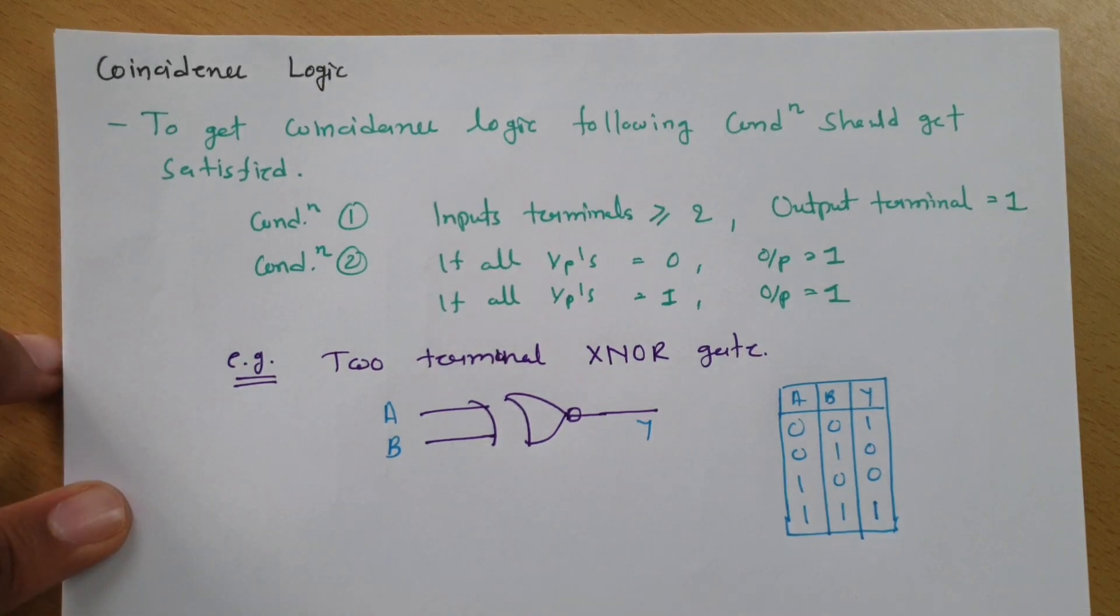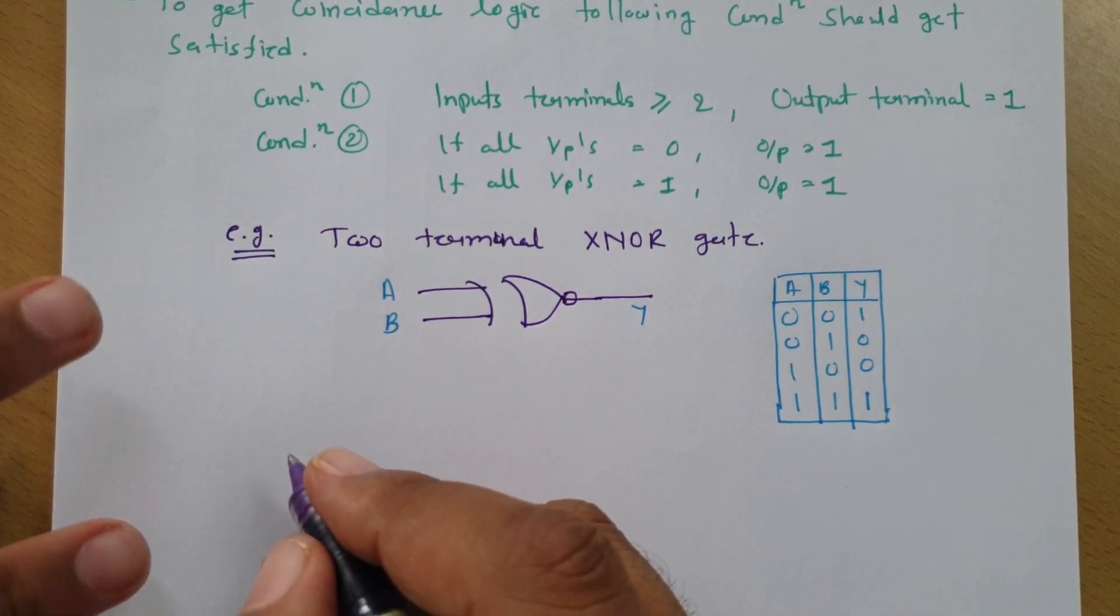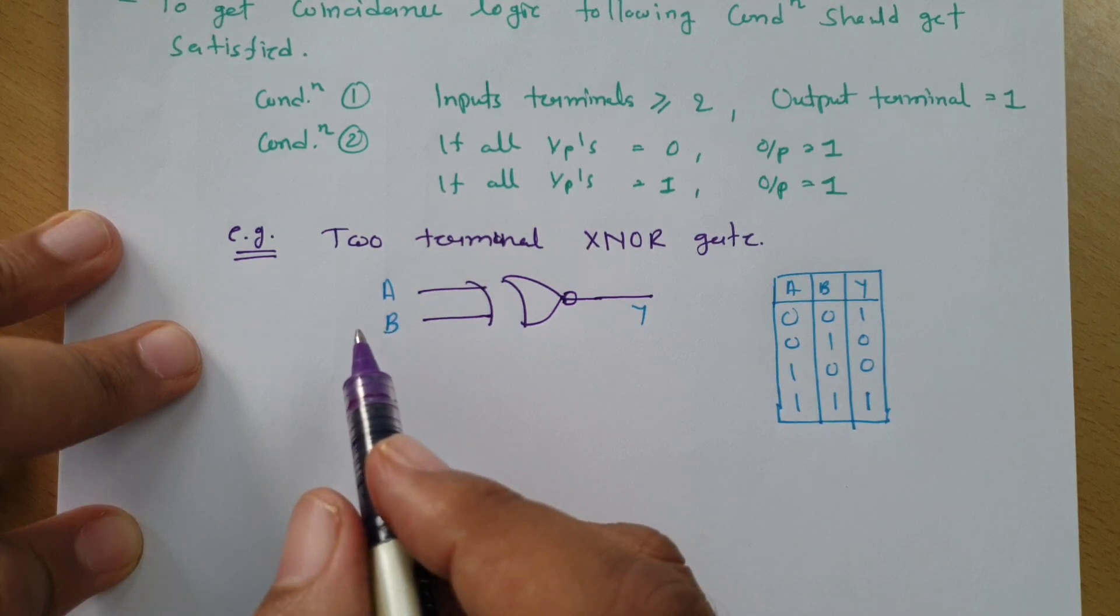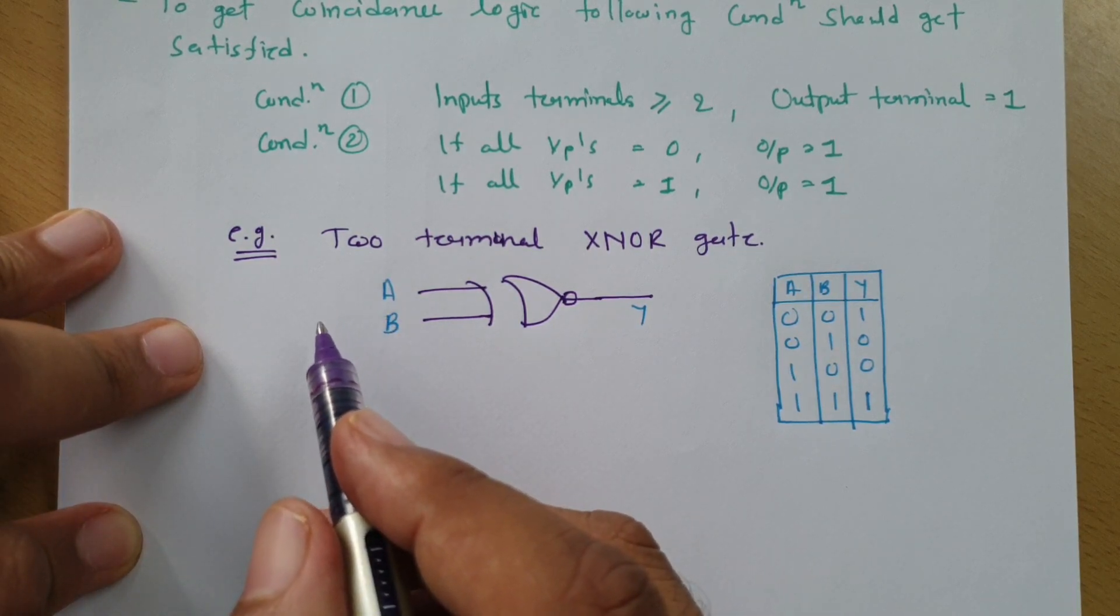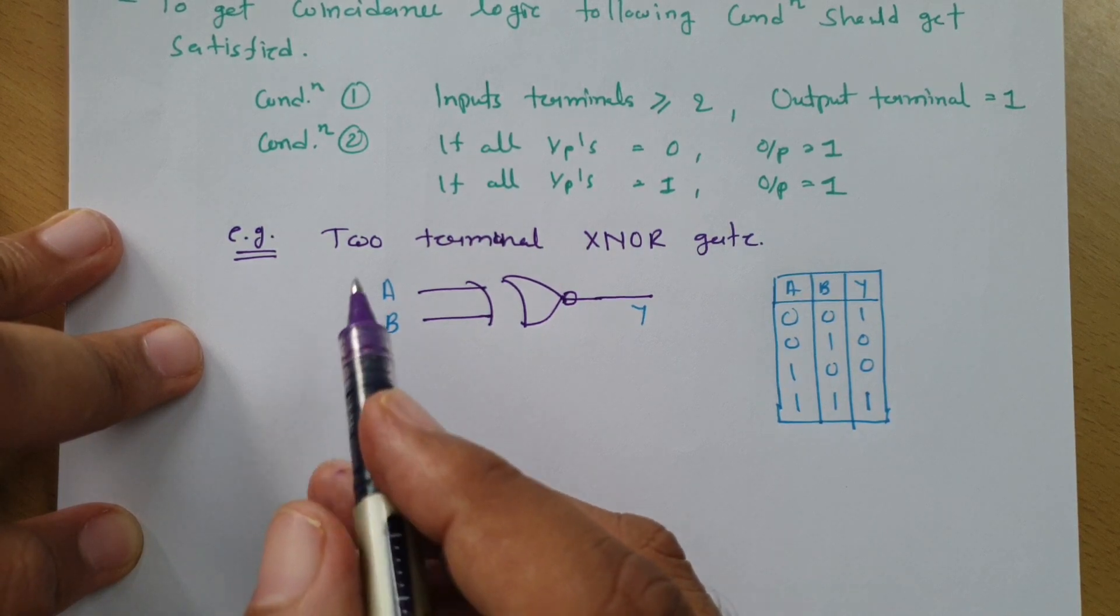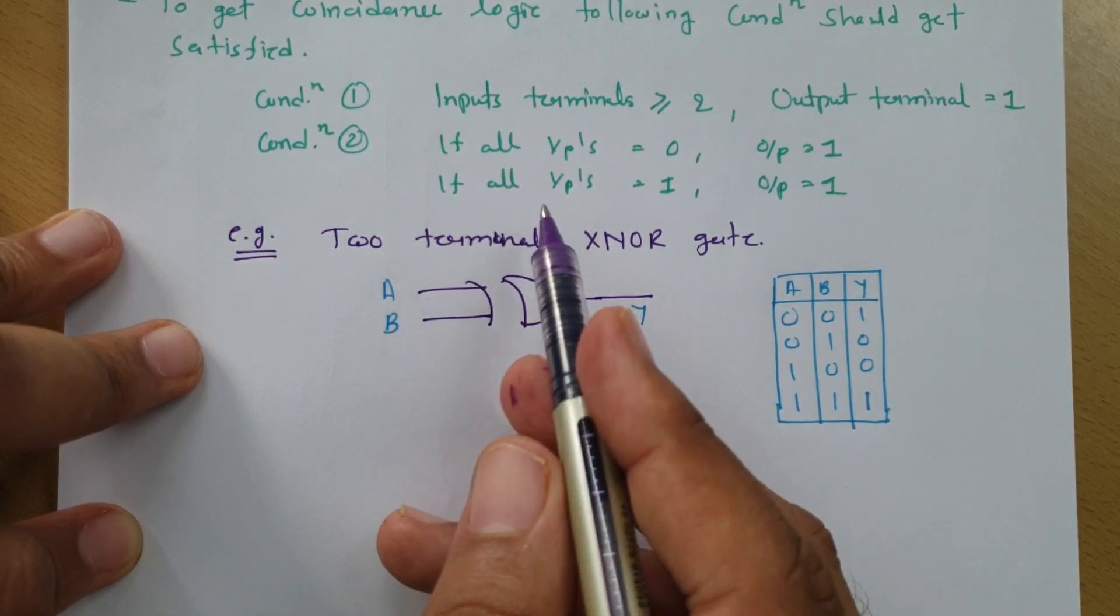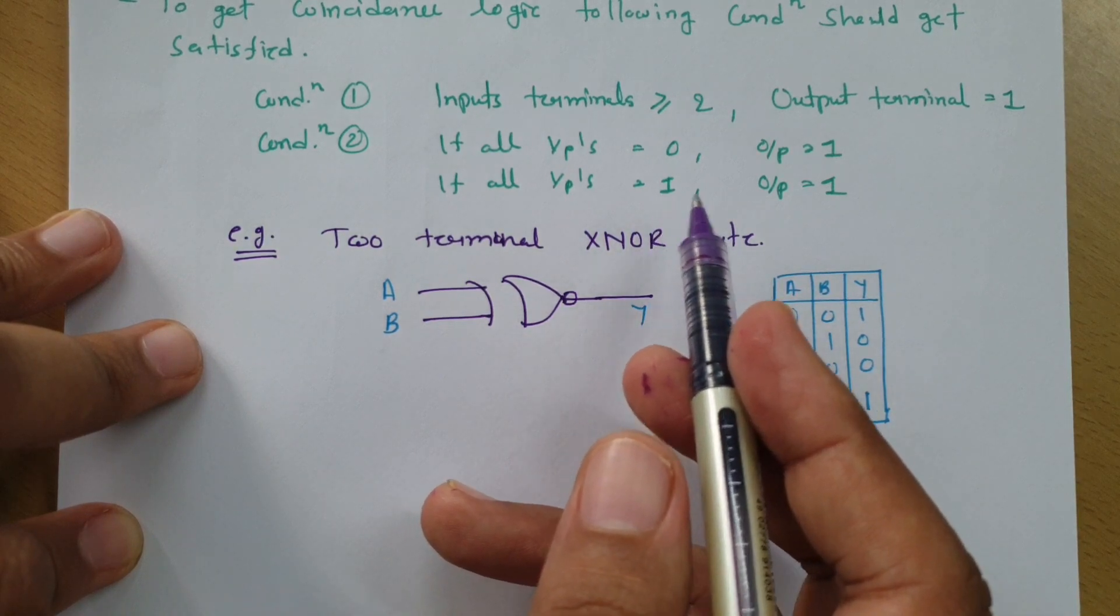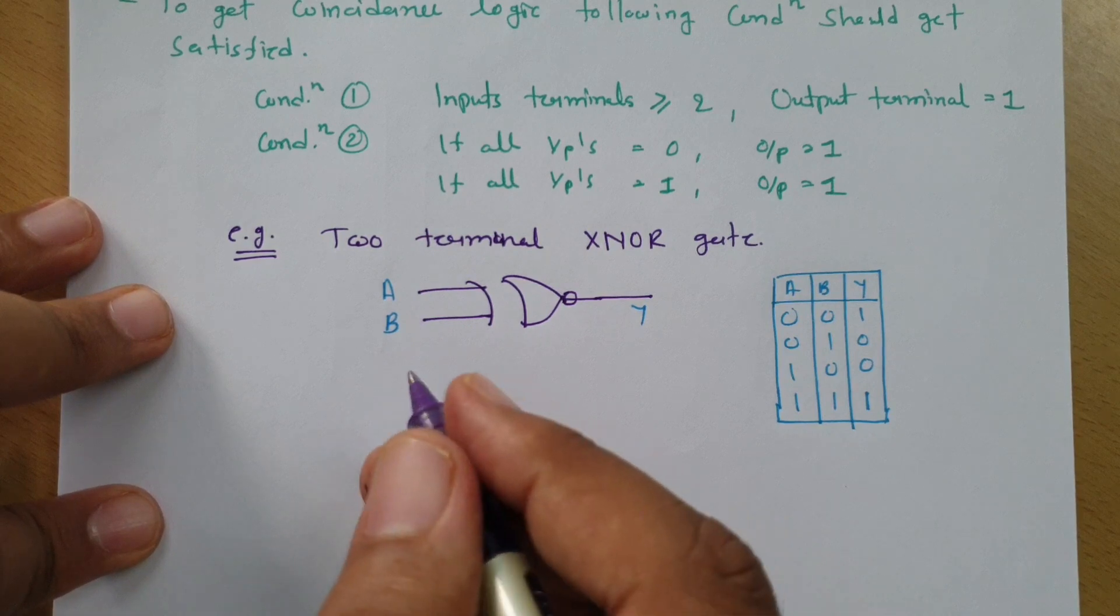Sometimes in entrance examinations, you'll find questions where the output is coincidence logic. In that case, you should understand what coincidence logic means. Coincidence logic means there are multiple terminals at the input side, a single terminal at the output side, and if you give all inputs as zero, output is one. If you give all inputs as one, output will also be one.